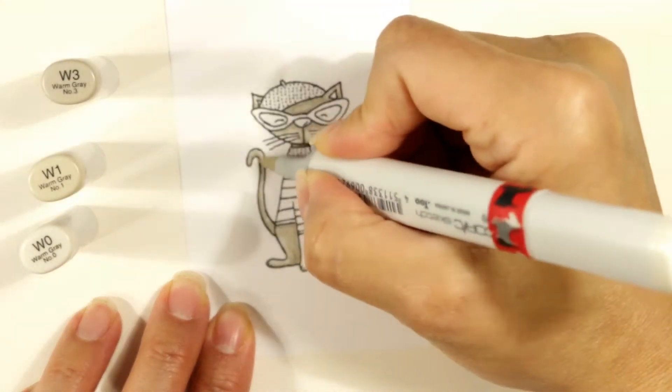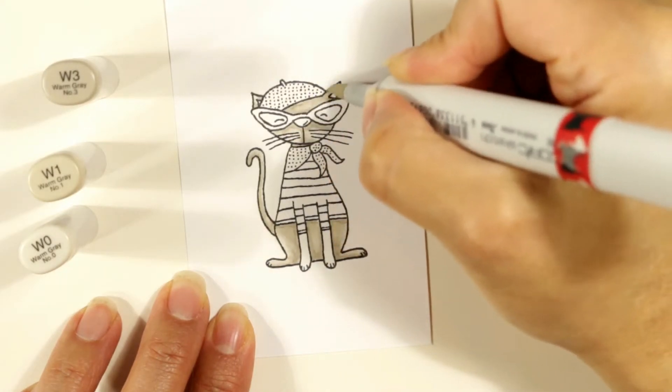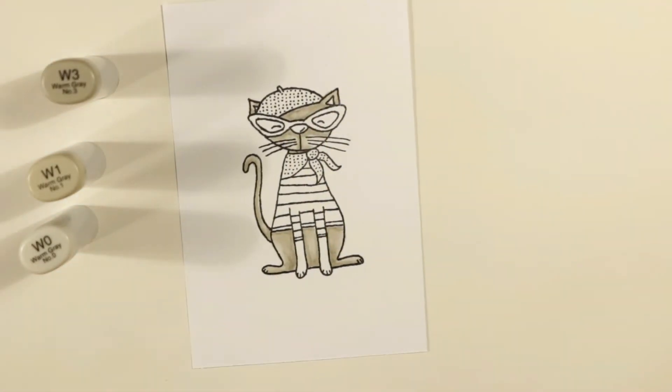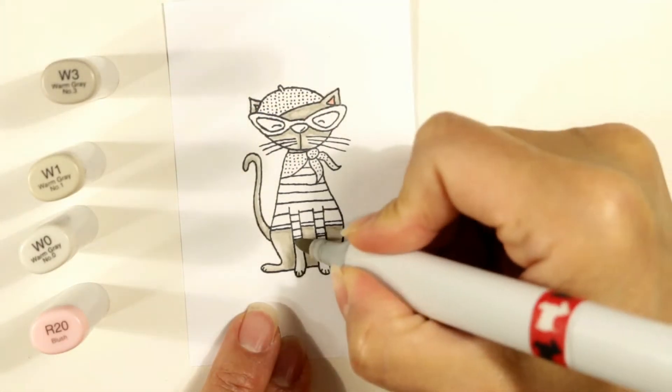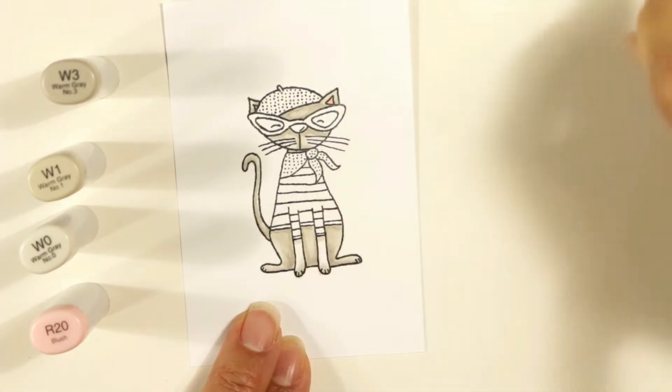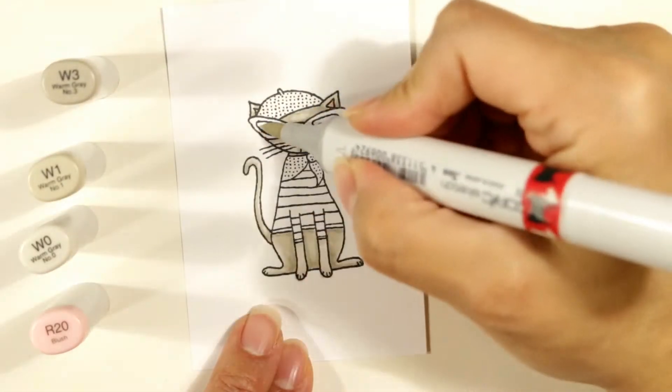I decide I'm going to cover up all of the white of the cardstock that I'm using to color on. So I don't want any kind of white there on the kitty. I want it to be that warm zero. And I realized I forgot to color in the front paws. So I'm just using the W1 and the W0 for the front paws.